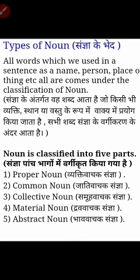The kinds of nouns are: number one, Proper Noun, called 'vyakti vachak sangya' in Hindi. Number two, Common Noun, called 'jati vachak sangya'. Number three, Collective Noun, called 'samuh vachak sangya'. Number four, Material Noun, called 'dravya vachak sangya'. Number five, Abstract Noun, called 'bhav vachak sangya'. These are the five kinds of nouns.